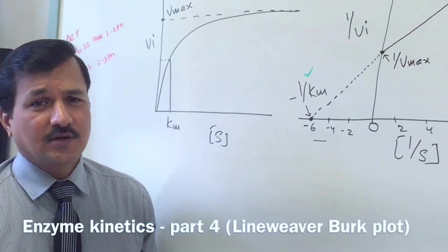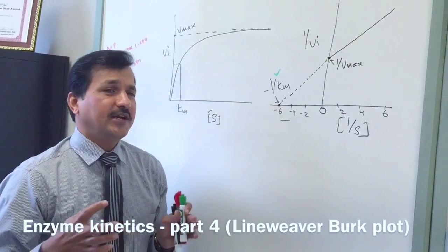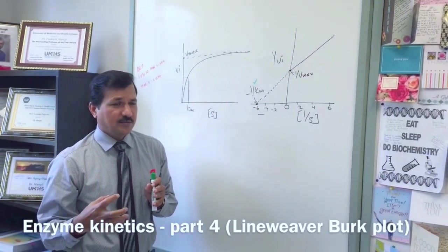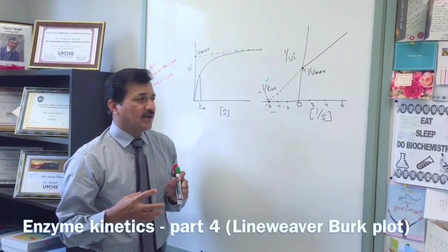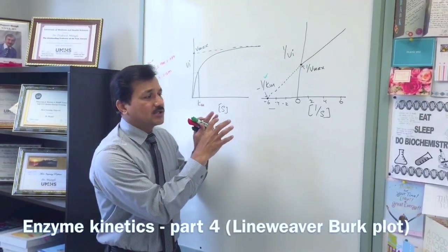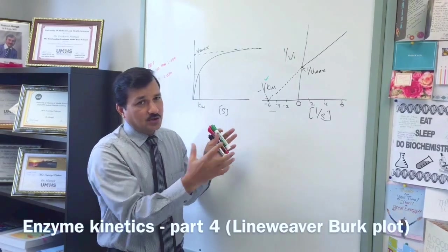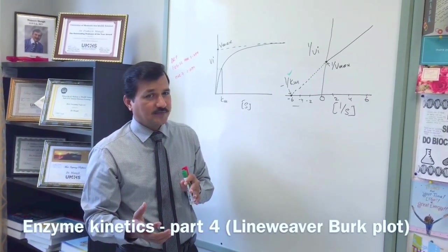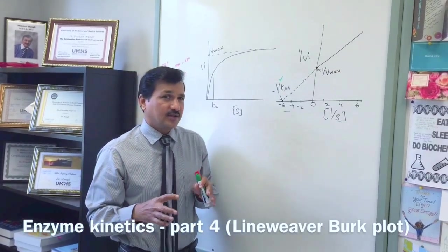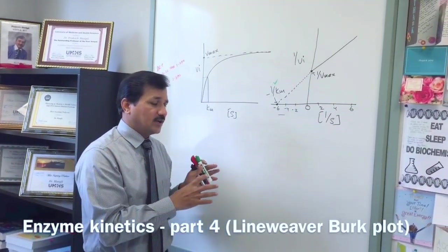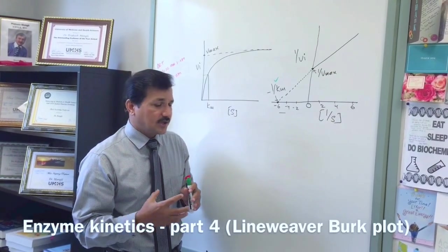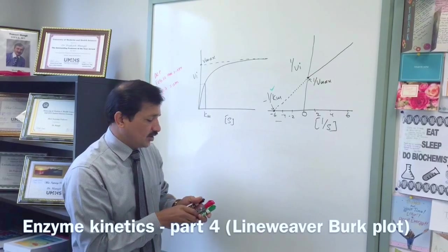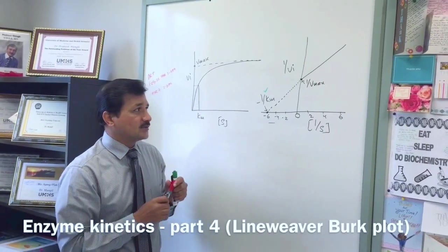Now, a competitive inhibitor is a substrate analog. It is going to compete with the substrate. By competing with the substrate, if the inhibitor binds to the active site of an enzyme, there is no reaction going on; if the substrate binds, there is a reaction going on. With this kind of kinetics, how does the competitive inhibitor change the kinetics of an enzyme?